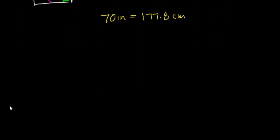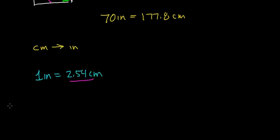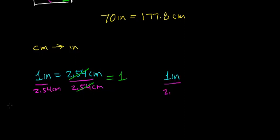Now suppose we want to go in the opposite direction — convert from centimeters to inches. We need a different conversion factor that takes us from centimeters to inches. Starting with our unit relationship that 1 inch equals 2.54 centimeters, we divide both sides by 2.54 centimeters. Since 2.54 divided by 2.54 equals one, our conversion factor — 1 inch over 2.54 centimeters — equals the number one. We can then multiply any number by this conversion factor without changing its value.